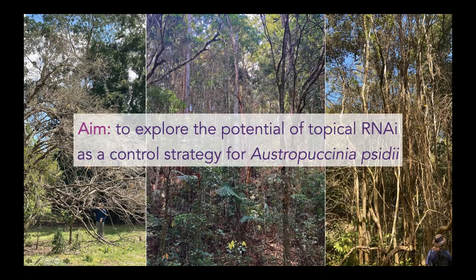The main aim of my project was to explore the potential of topical RNAi as a control strategy for Austropuccinia. First, I'm going to take you through some background about myrtle rust, then explain what RNAi or RNA interference is and how it works, and how we've used it to try and control the pathogen. Then I'll touch on the methods and some of the really exciting results.